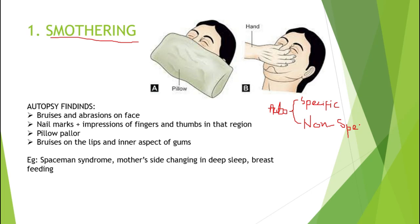Can you recall the non-specific findings? We have previously discussed them. Non-specific findings include cyanosis, congestion, edema, petechial hemorrhages, visceral congestion, and abnormal fluidity of the blood. Specific findings will be different for each type of asphyxia and will help us predict the exact cause of death.